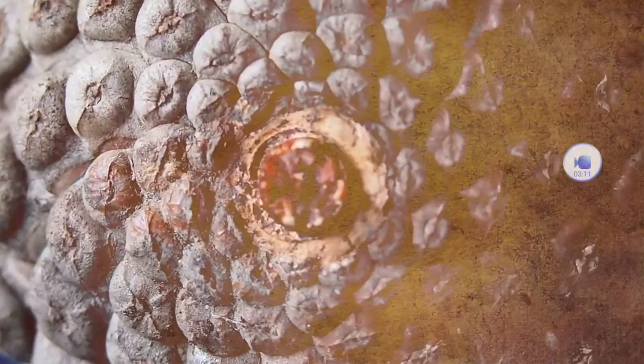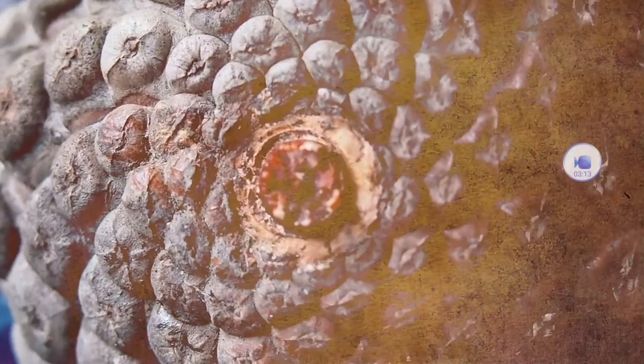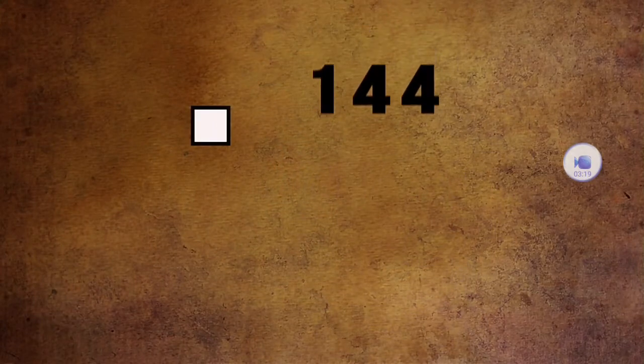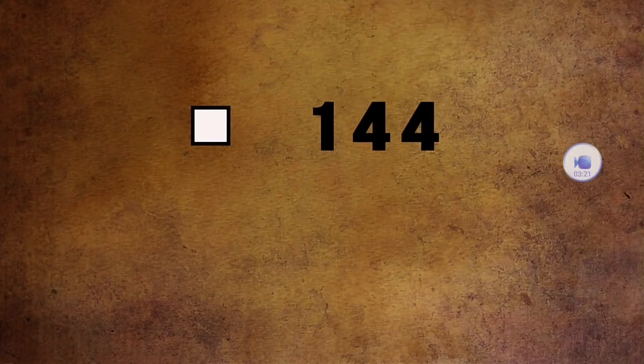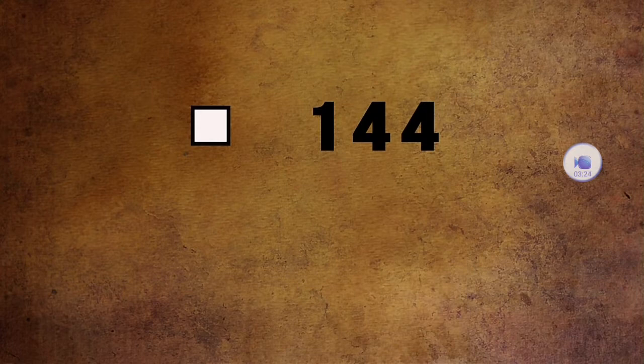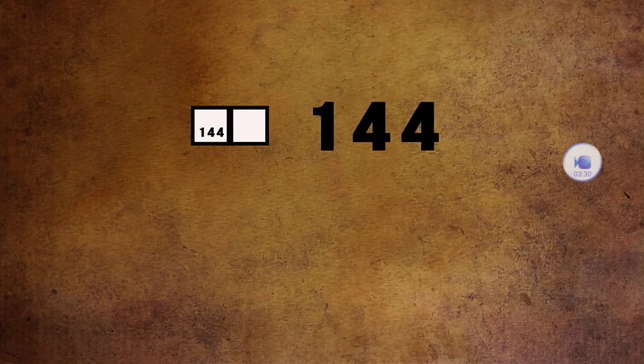To see how the Fibonacci sequence reveals a spiral, as well as a significant mathematical constant known as the golden ratio, we will need to think spatially. Let's start with a square, but rather than a single square with a volume of 1, we will once again assign a sonic frequency to this shape. In this case, we will choose 144. Zero plus 144 is, of course, another 144.